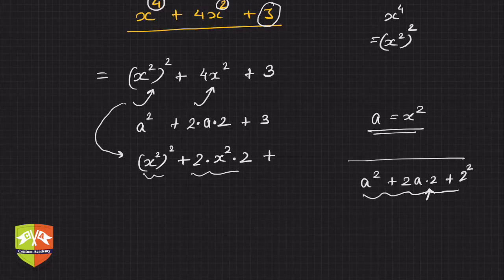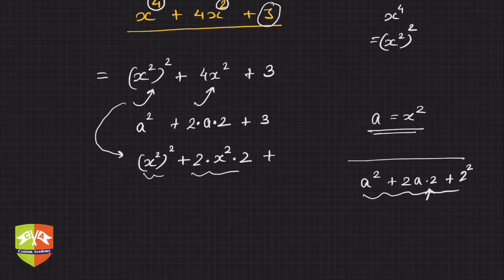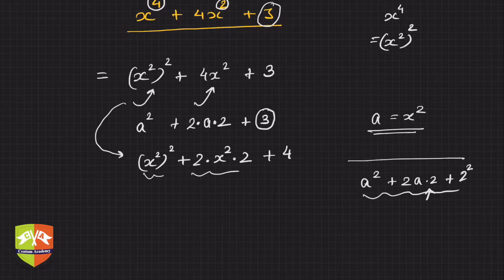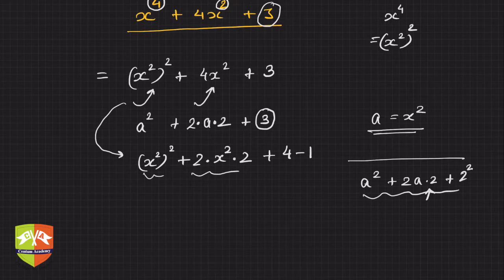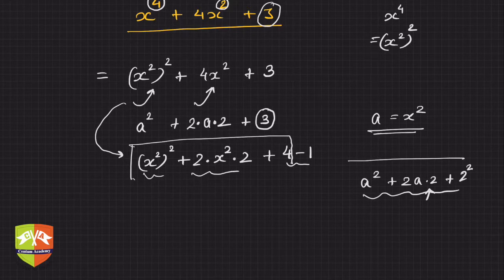I need to have 4 here, but my dear friends, only 3 was given. That means I have to compensate this 4 by subtracting 1. So 4 minus 1 is 3. Now you have to change your perspective and look at these three terms together.